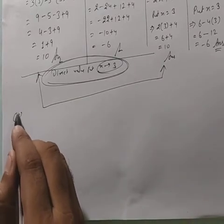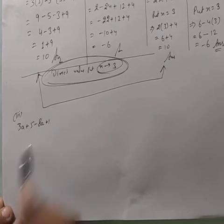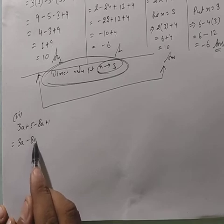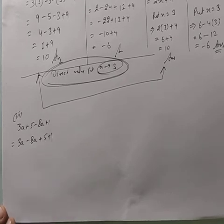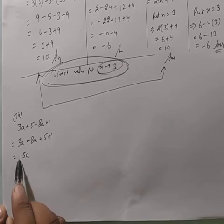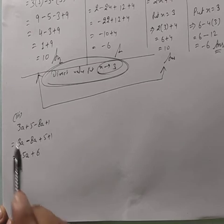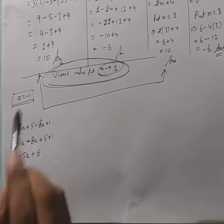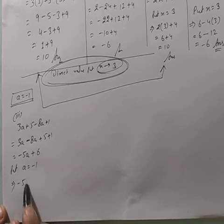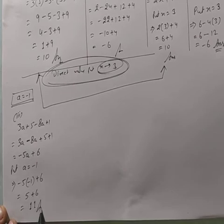Third part: 3a plus 5 minus 8a plus 1. Simplify करो — like terms: 3a minus 8a = minus 5a, और 5 plus 1 = 6. Simplified: minus 5a plus 6. अब a = minus 1 put करो: minus 5×(minus 1) plus 6 = 5 plus 6 = 11.